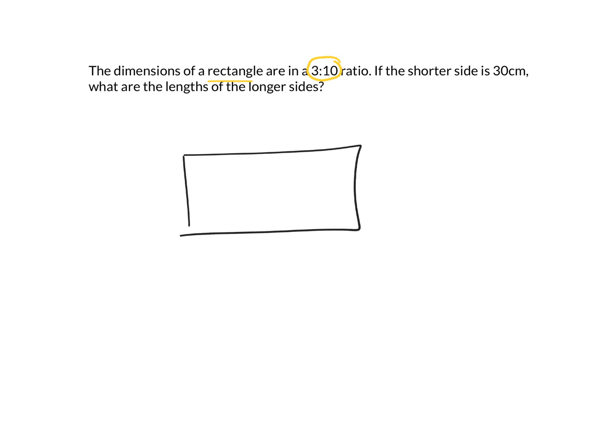And we're told that the dimensions have this ratio. Well, dimensions of a rectangle are length and width. We know the length is the longer side and the width is the shorter side. So the ratio is 3 to 10. So this would be a ratio of width to length, because the width is the shorter side and the length is the longer side.